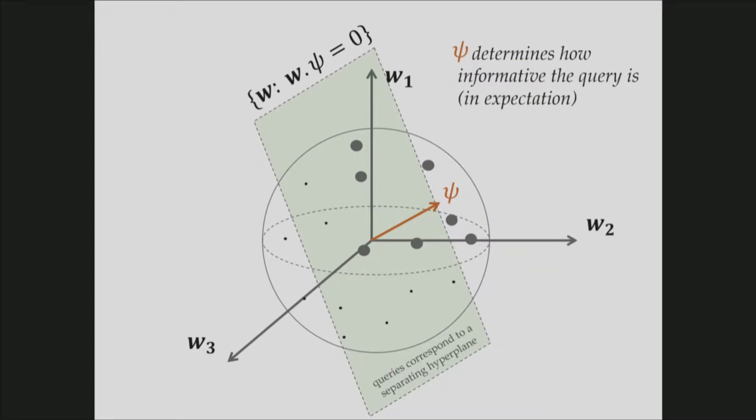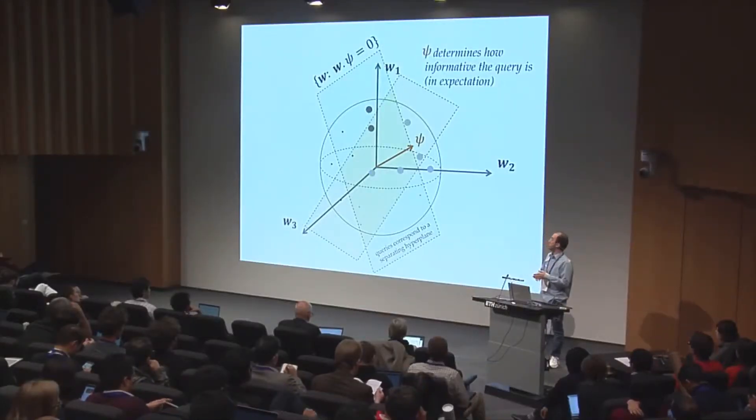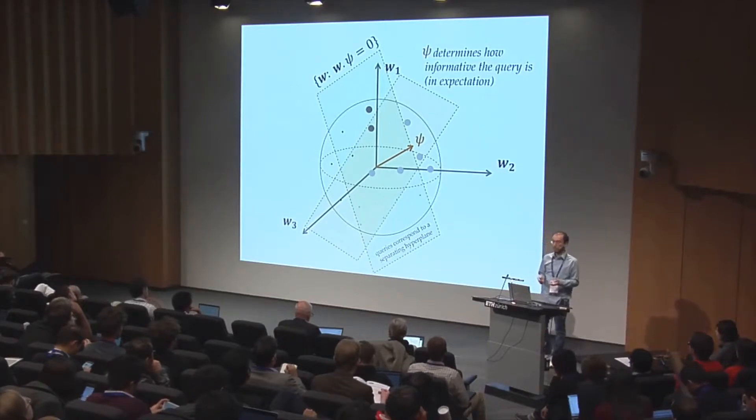So we are decreasing the probabilities there by the update function. And this implies ψ determines how informative the query is. For example, if we have a second query where all the most probable weights are on the same side of the hyperplane, then this query is not really informative because we almost know what the human will select. But some other hyperplane can be much more informative by almost equally dividing the volume of weights into two pieces.